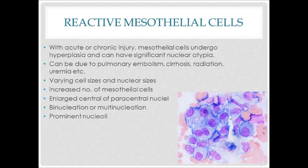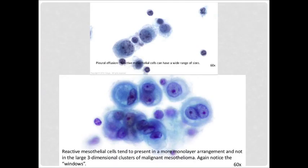Next, the appearance of reactive mesothelial cells. The cells usually vary in cell size and nuclear size. They have large central or paracentral nuclei. The reactive cells can also have binucleus or multinucleus and have prominent nucleoli. Here are the images of reactive mesothelial cells — you can see the nuclear size is varying between cells, and binucleus with prominent nucleoli are also shown in the bottom image.